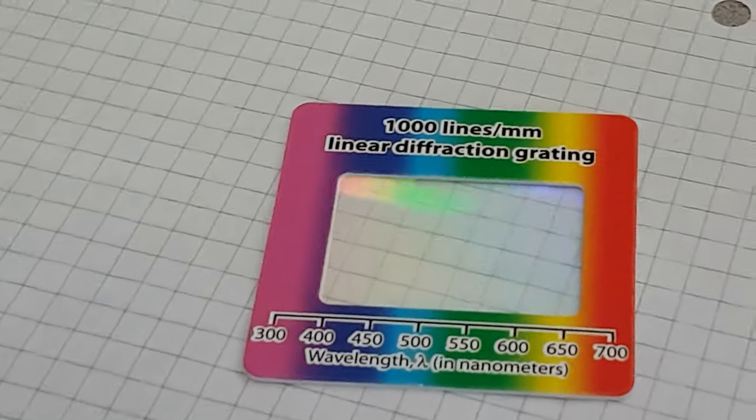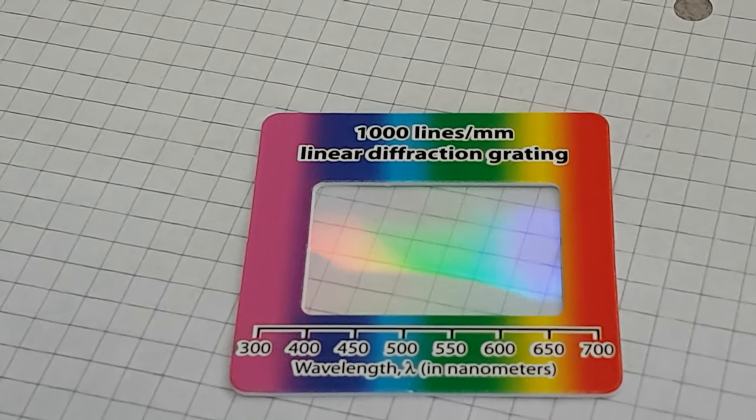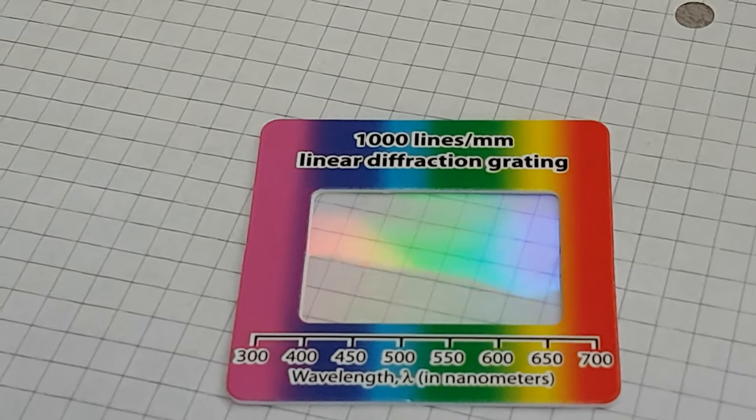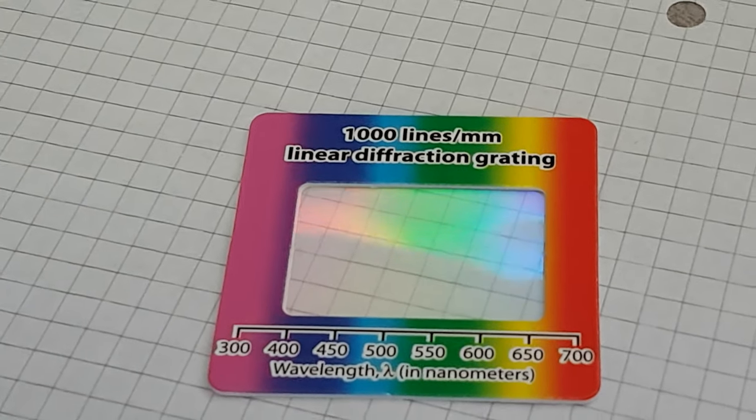Where was that? It was over here, wasn't it? There we go. So if we were on a sunnier day, it might be a better representation, but you get the idea. Nice, smooth gradient there coming from the window.